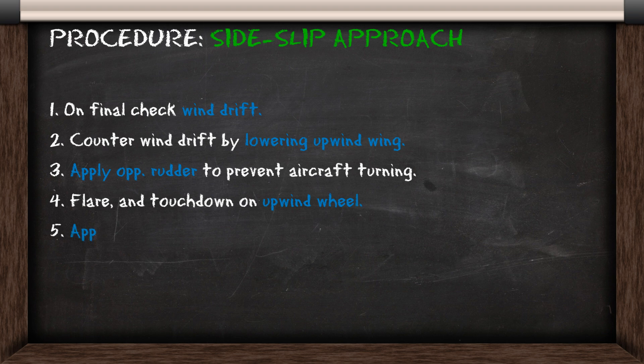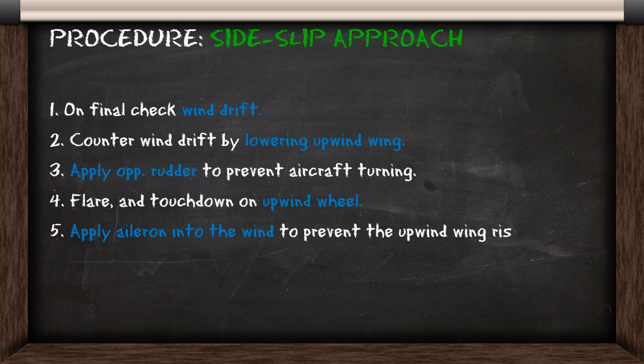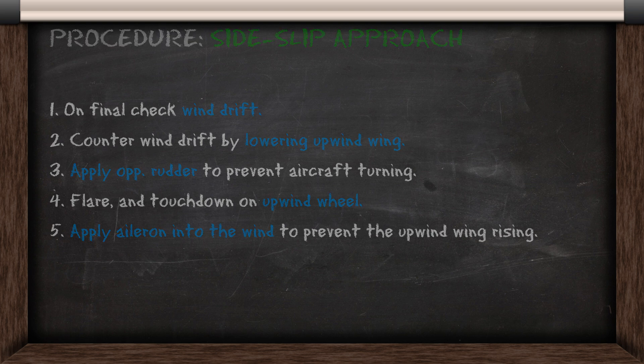Once you touch down you apply aileron into the wind to prevent the upwind wing rising. That's the procedure for a side slip approach, so we'll go in game and check that out and then after that we'll look at a crabbing approach.